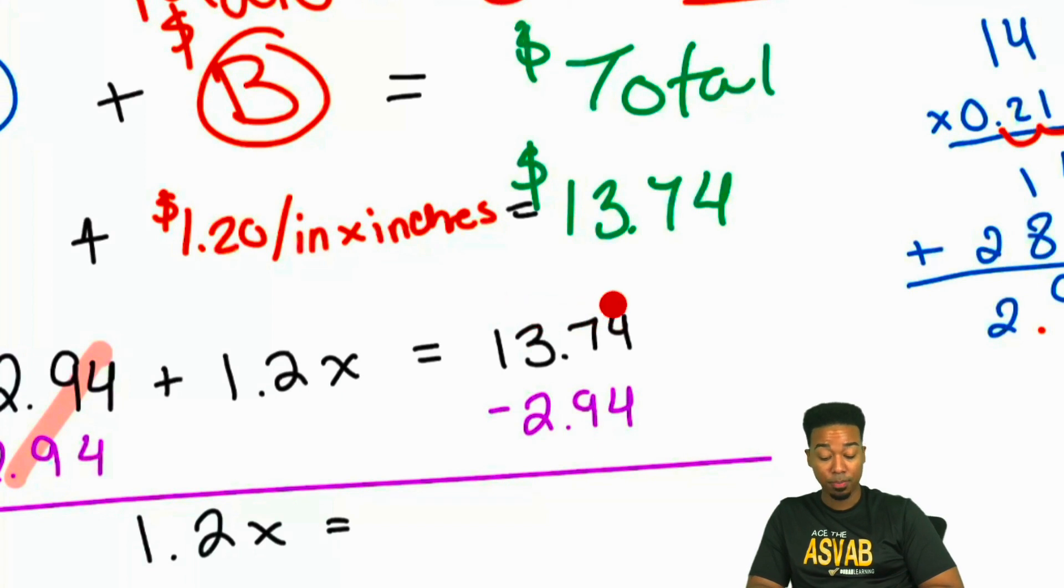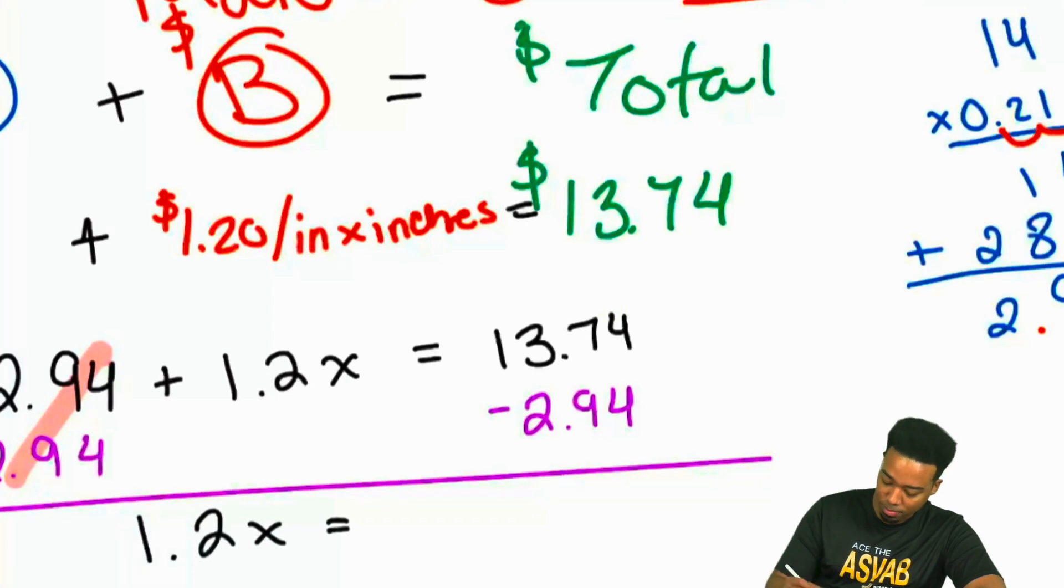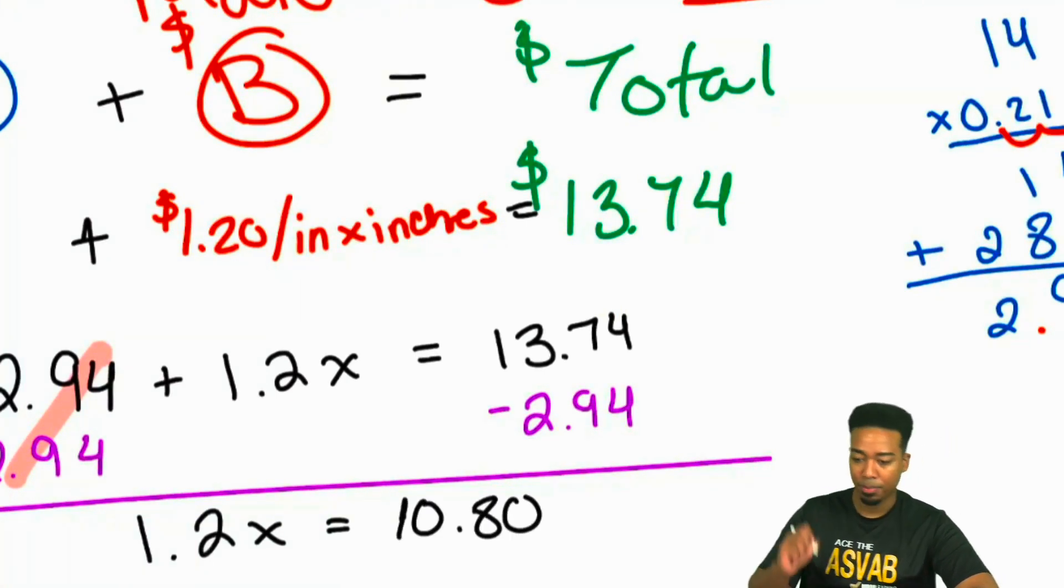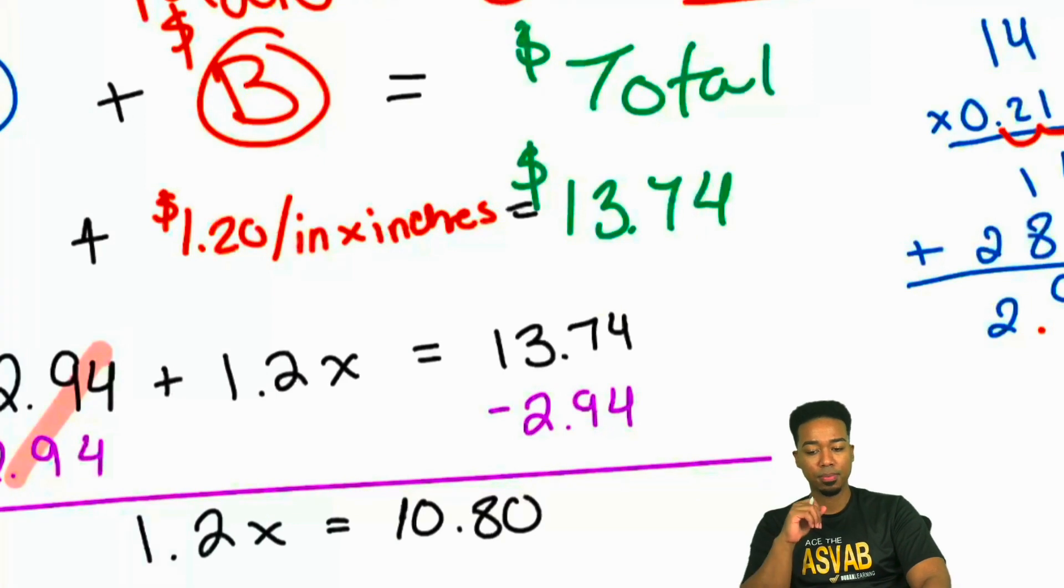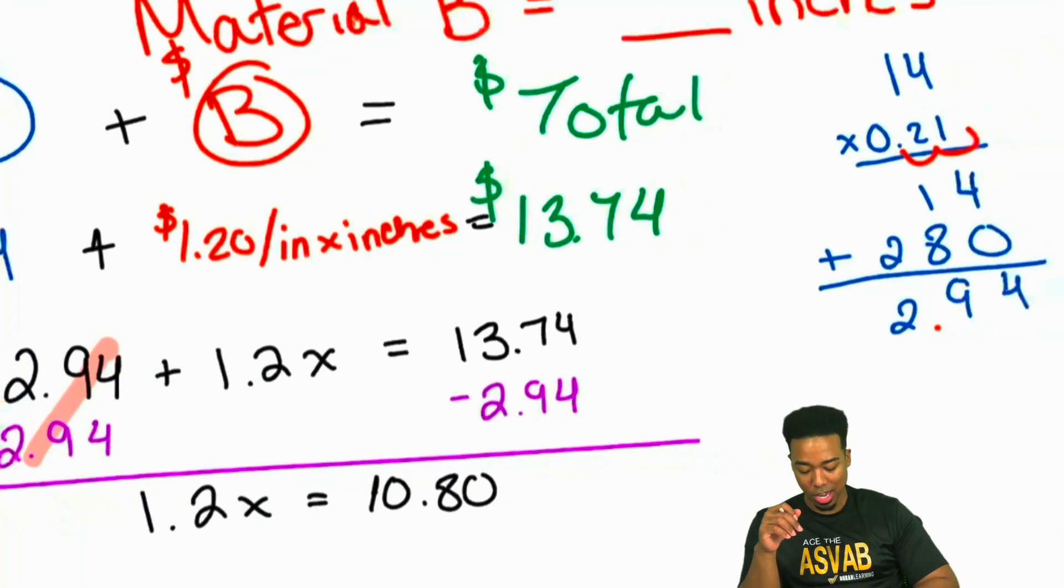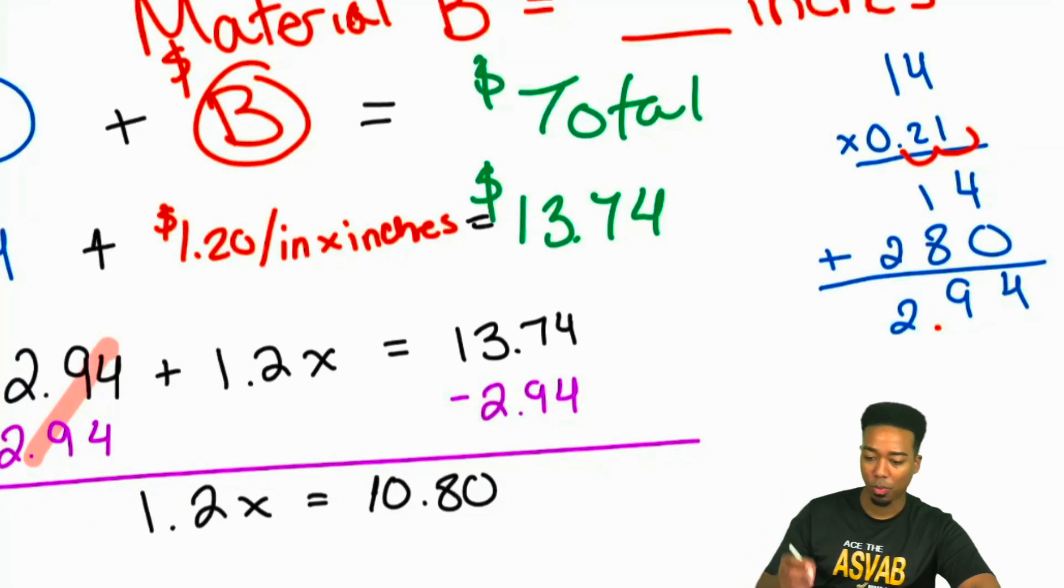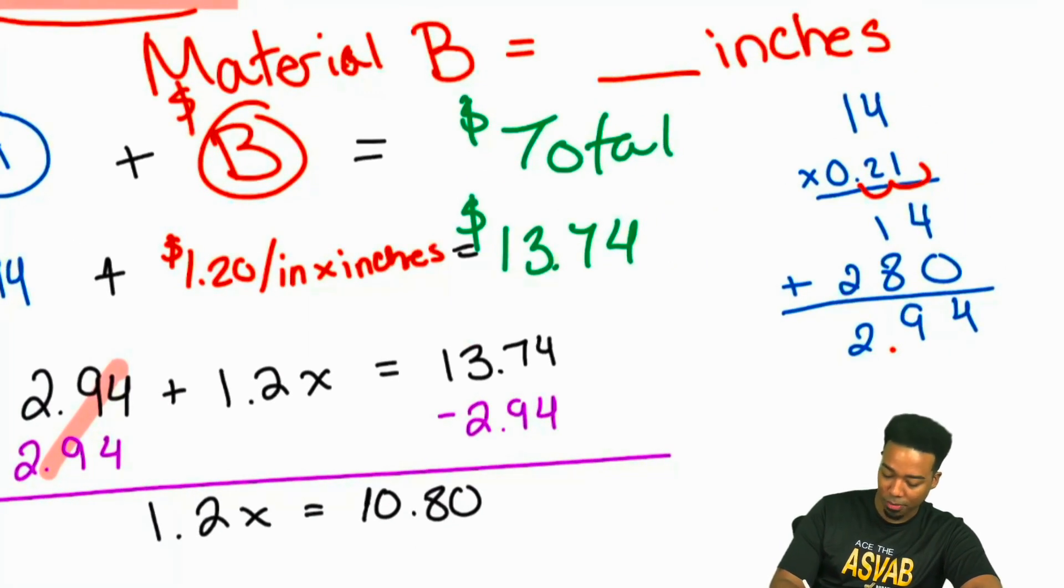So subtract $3, that's $10.74. Add the 6 cents back, that's $10.80. Makes it a little easier. And yes, that's right, Nick, the last step that we're going to do here is going to be to divide both sides by the 1.2. And we are now finally set. Divide by 1.2 on both sides.